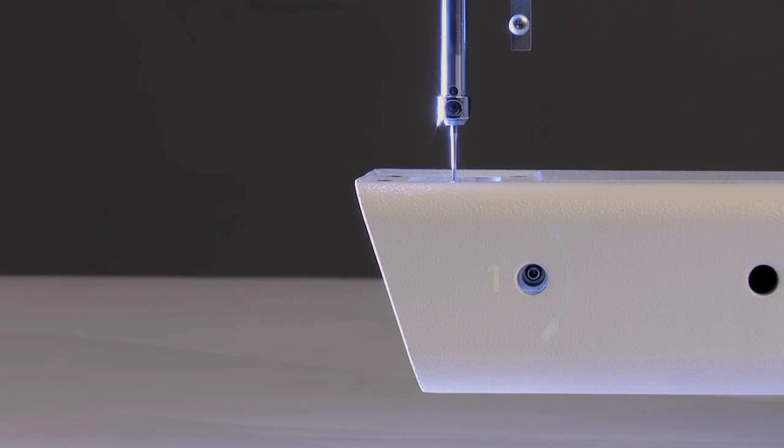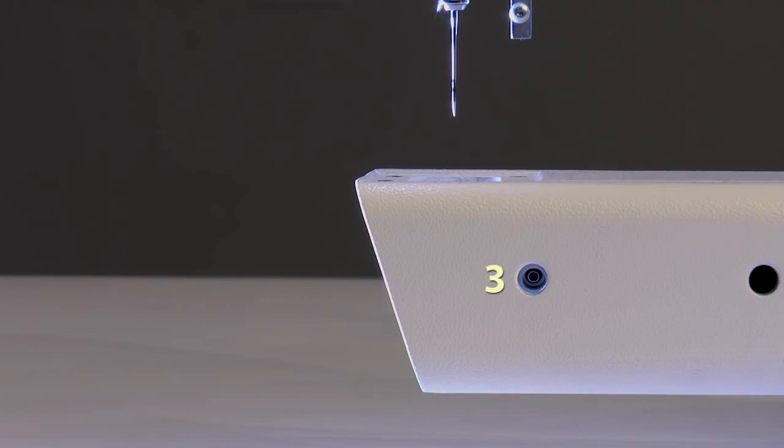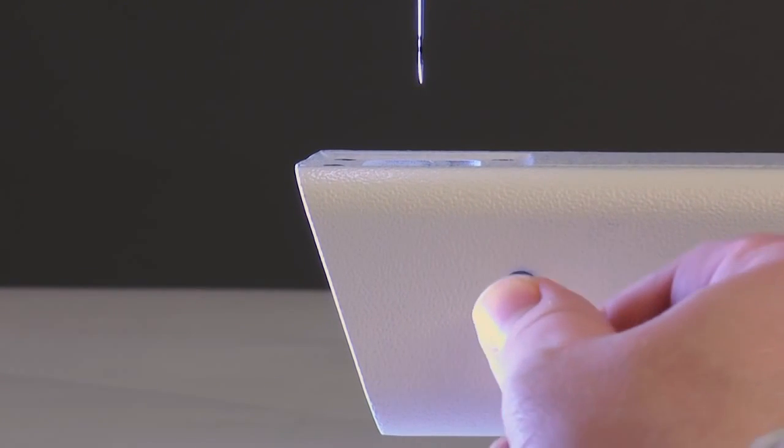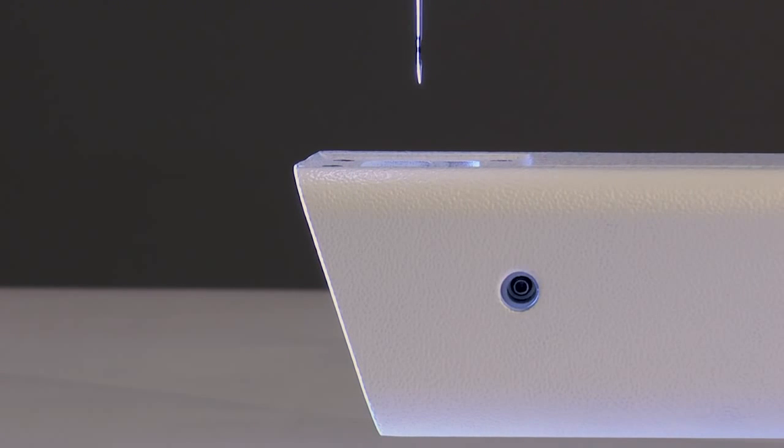This allows us to work back the other way to correct the needle position as we loosen the set screws. To loosen the set screws, use the two millimeter Allen wrench that came with the machine. Rotate each set screw counterclockwise, but be sure not to completely remove the screws.